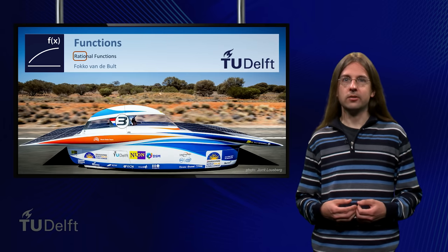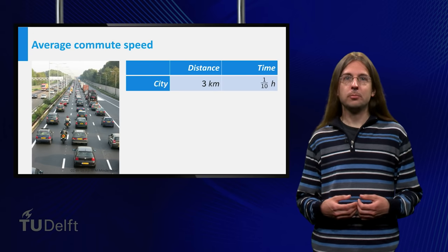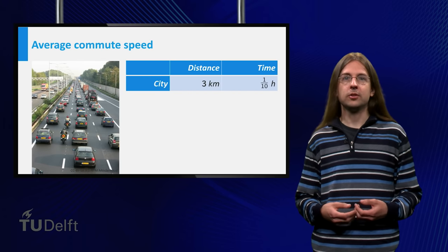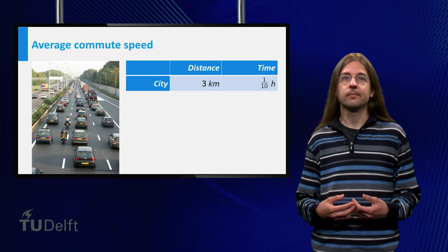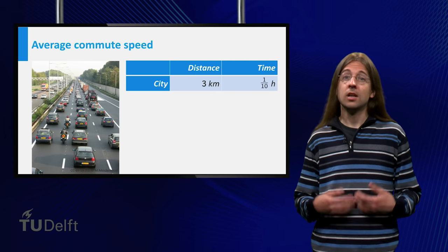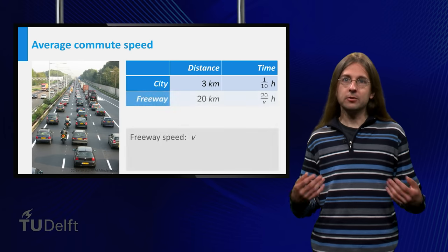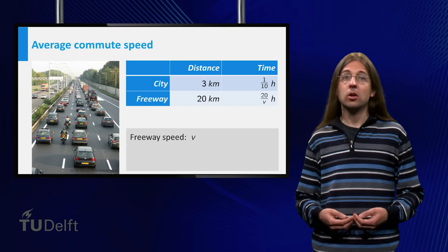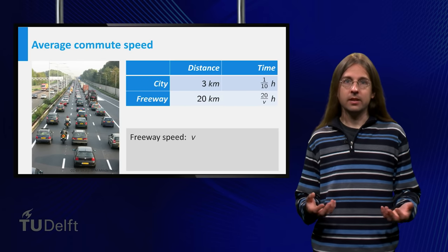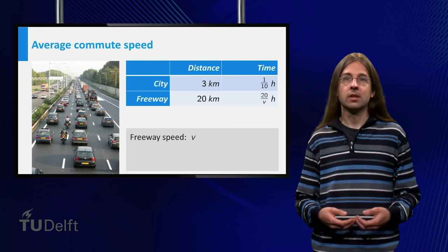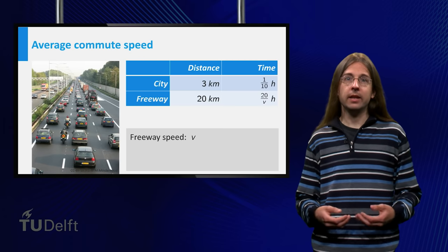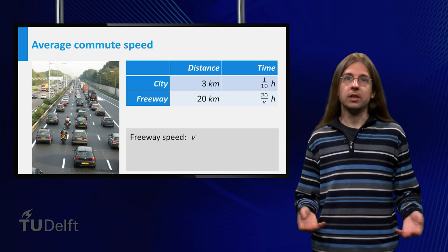Let us look at an example. Suppose my trip to work involves 3 km of city traffic, which always takes me 6 minutes, which is 1 tenth of an hour. Subsequently I have to drive 20 km on the freeway with a speed v, which depends on the amount of traffic. Thus, the time on the freeway is 20 km over v.